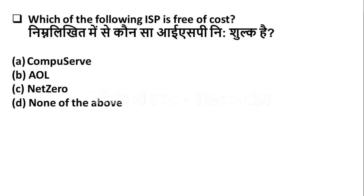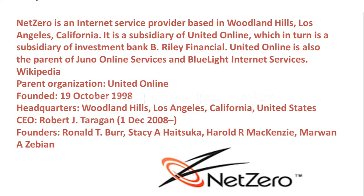Which of the following ISPs (Internet Service Providers) is free of cost? Option A: CompuSor. Option B: EOL. Option C: Net Zero. Option D: None of the above. Net Zero is the free Internet Service Provider. Net Zero is an Internet Service Provider based in Woodland Hills, Los Angeles, California. Remember this point.